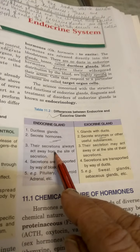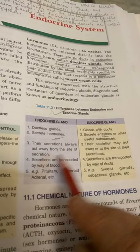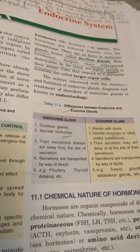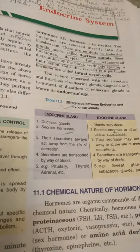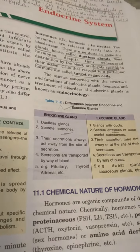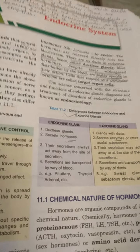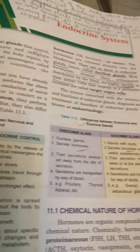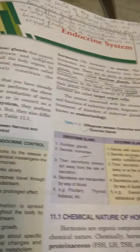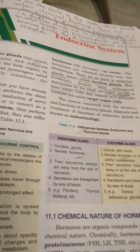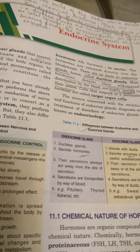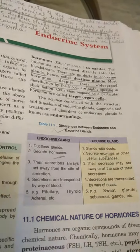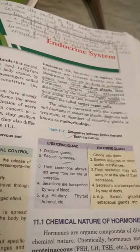Endocrine gland secretions — hormones — always act away from the site of secretion. For example, the pituitary gland is in the forehead region of the brain, and its hormones are carried by the blood to stimulate the thyroid gland in the neck, or the adrenal glands near the kidneys. So the source organ is away from the target organ. Whereas in exocrine glands, secretions may act at or away from the site — for example, gastric juice is secreted from the stomach wall and acts there.